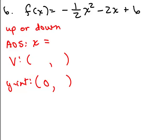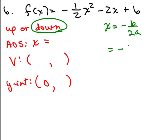Number 6. Does it go up or down? The coefficient of x squared is negative 1 half, so since it's negative, it goes down. To get the axis of symmetry, let's use the formula x equals negative b over 2a. b is the coefficient of x, which is negative 2. So we have negative times negative 2 in the numerator, giving positive 2, and 2 times negative 1 half in the denominator, giving negative 1. So 2 divided by negative 1 equals negative 2, and x equals negative 2 is the axis of symmetry.